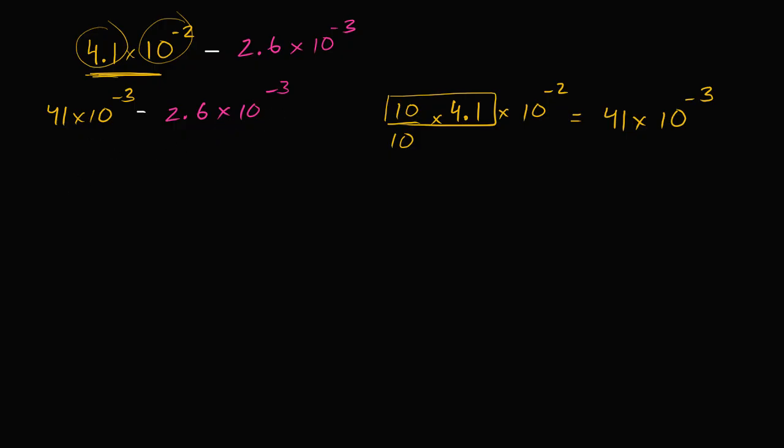Well this is going to be the same thing as 41 minus 2.6, 10 to the negative 3's. One way to think about it, I've just factored out a 10 to the negative 3.